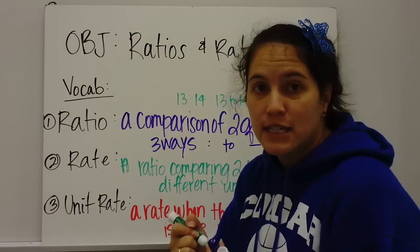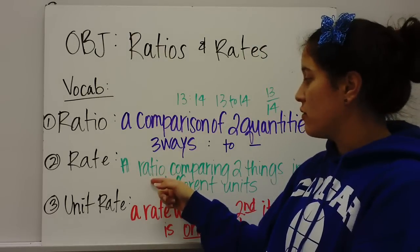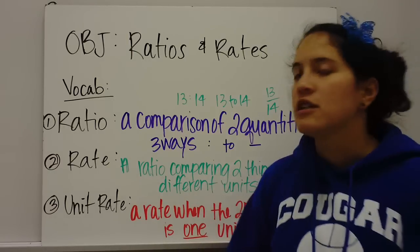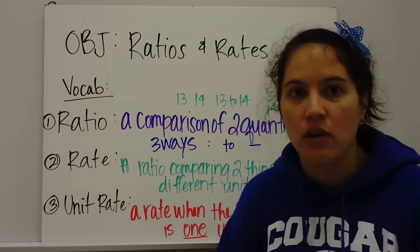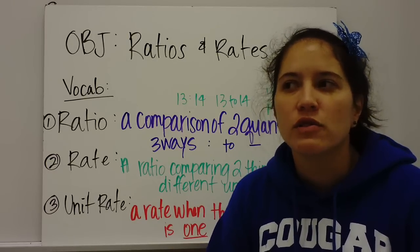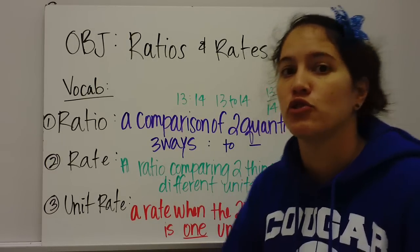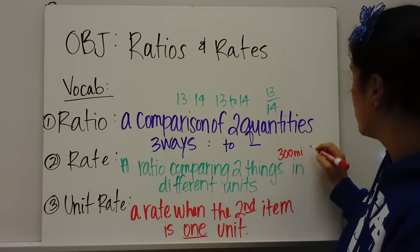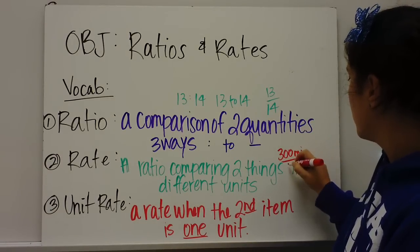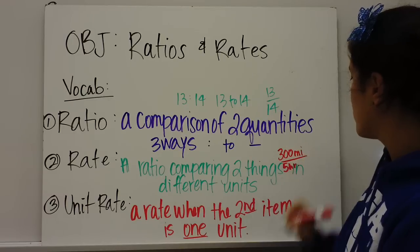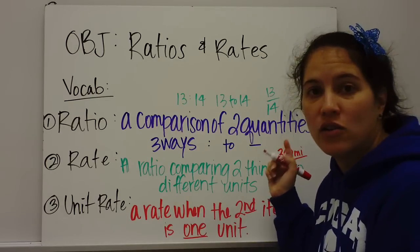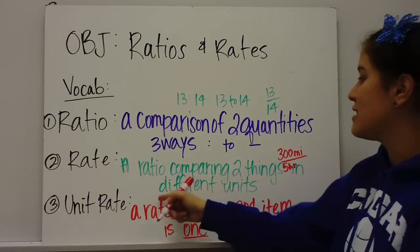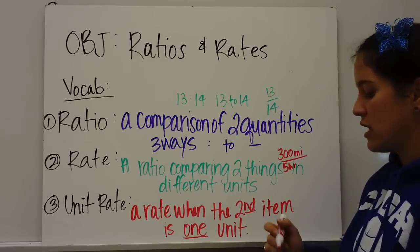The second word is rate. A rate is a ratio comparing two things in different units. So an example of that would be boys and girls are like the same unit, but let's say you're going to drive 300 miles in five hours. That is a rate because you're comparing miles and hours. So a rate is comparing two things in different units.